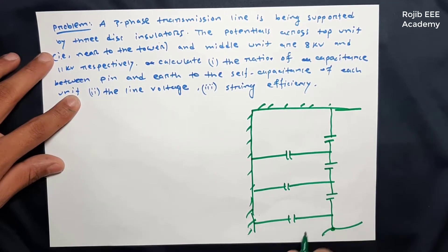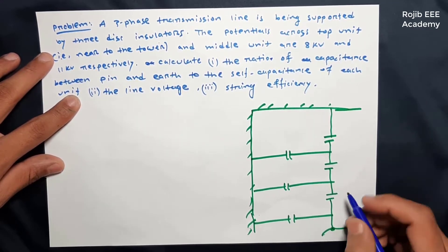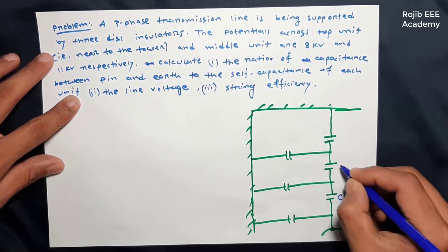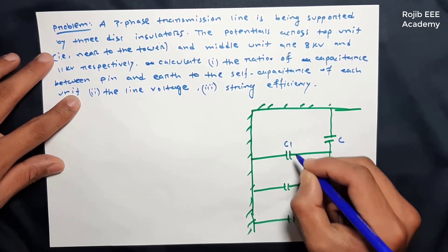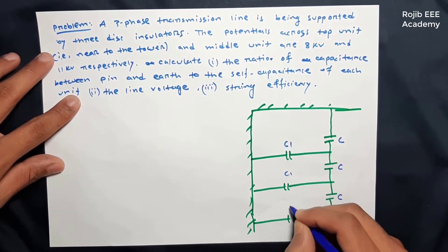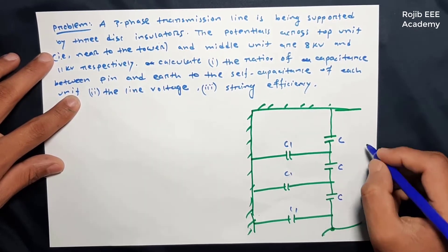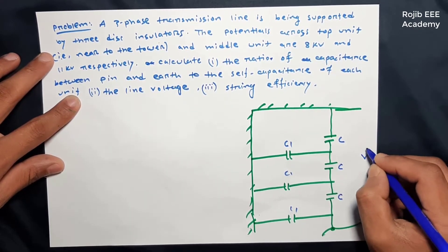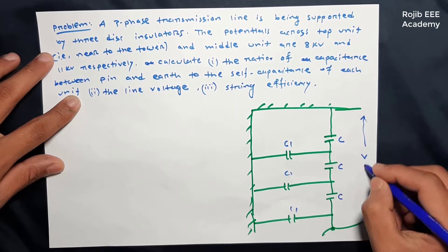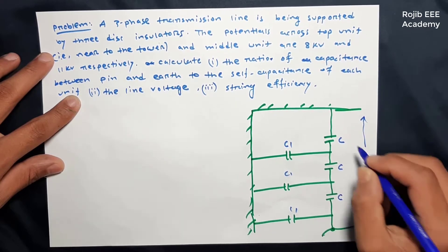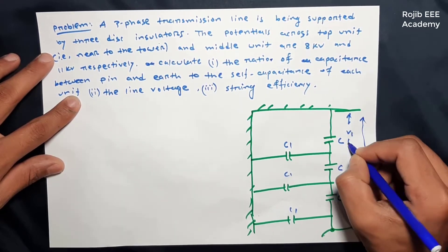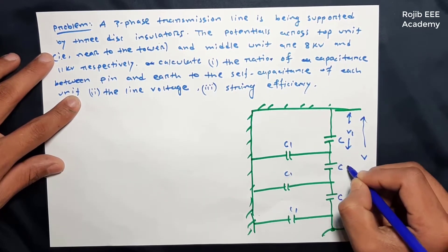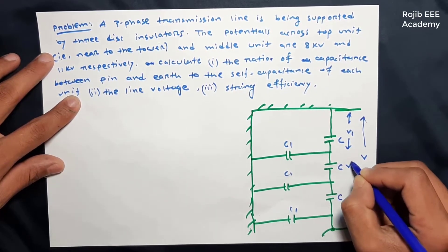We will define the current and capacitances. The total voltage is V. We will label V1 as the top unit voltage, and V2 as the middle unit voltage.